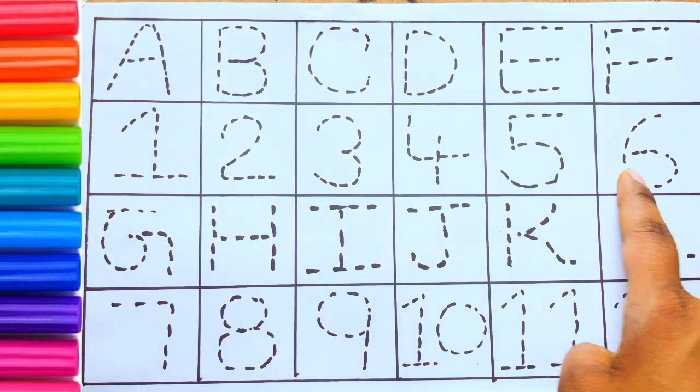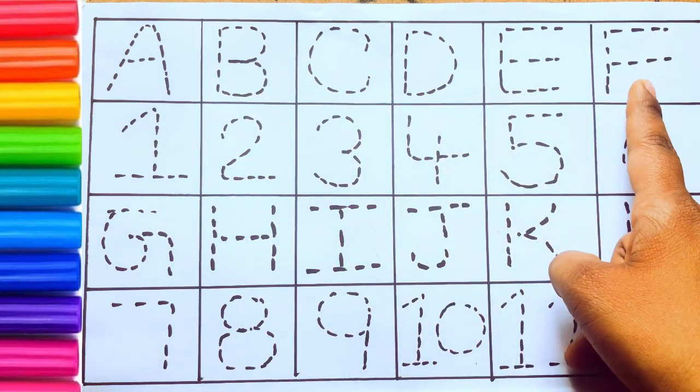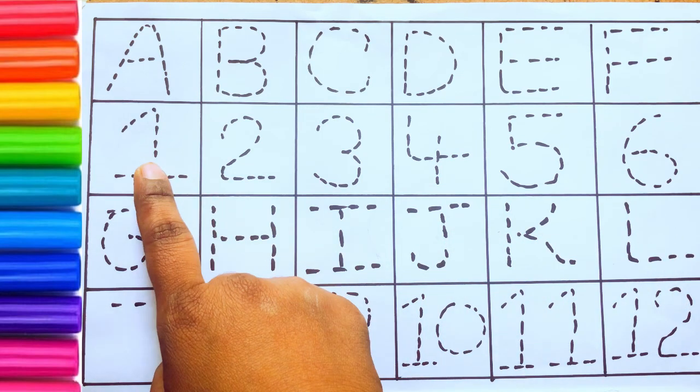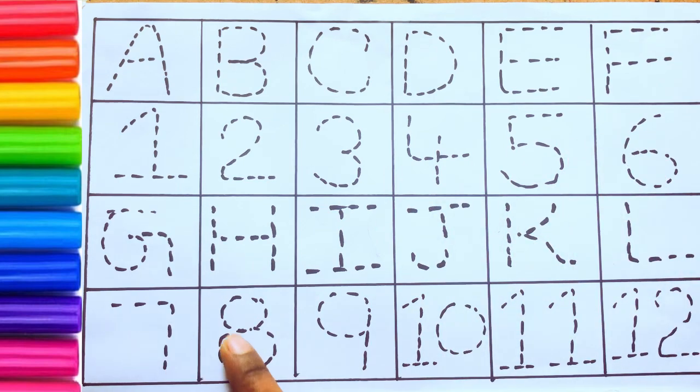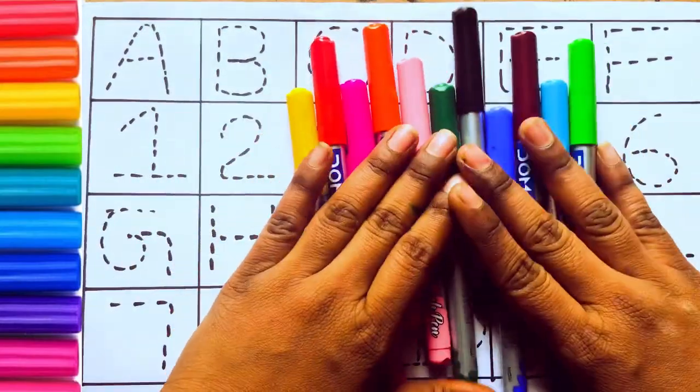A, B, C, D, E, F, G, H, I, J, K, L and one, two, three, four, five, six, seven, eight, nine, ten, eleven. Okay, let's see some colors. These are all the color pencils.